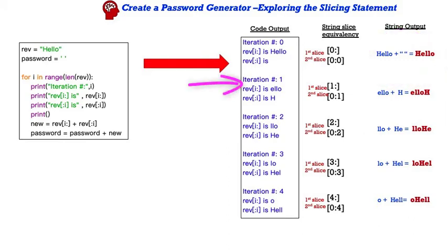Iteration 1, which is actually the second iteration, again, zero-based indexing. The first slice is 1 colon. The second is 0 colon 1. So the first slice is ELLO plus the H for the second slice, and that makes the word ELLO H at the end. And then we keep going like this, the second iteration, which is actually the third time around, LLO plus HE, the third iteration, LO plus H-E-L, and then the fourth iteration, O plus H-E-L-L, which is O-H-E-L-L. And that's how it kind of jumbles those words all around. That's what happens. I wanted to make sure that we were all clear on that.